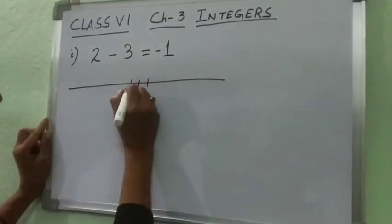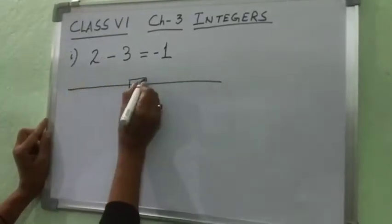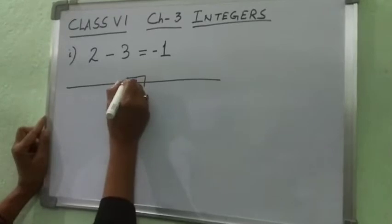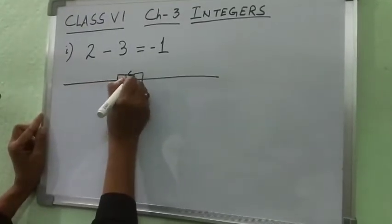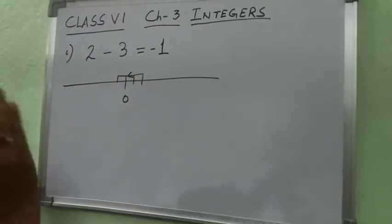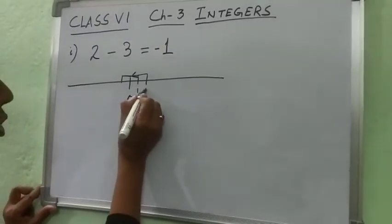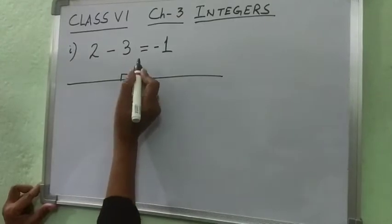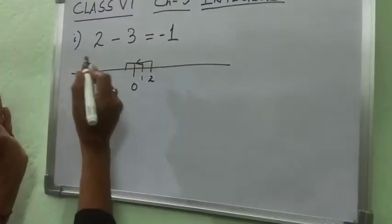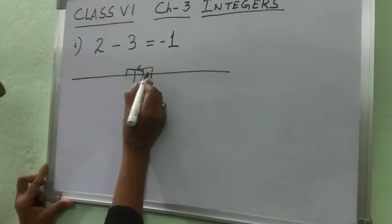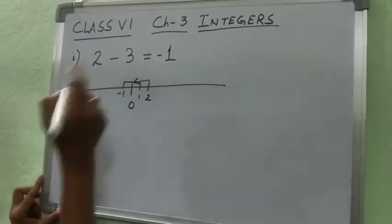So plus 2 goes from 0 to plus 2. Then minus 3: 1 step, 2 steps, 3 steps. You have to put an arrow. You have to remember which direction to put the arrow. Moving 2 steps, then negative direction — the left side — you have to move 3 steps: 1, 2, 3. So your answer is minus 1.